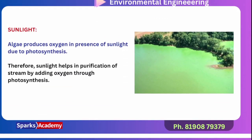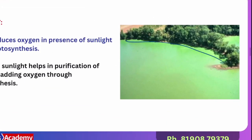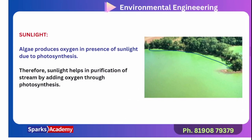Regarding sunlight influences: algae produce oxygen in the presence of sunlight through photosynthesis. In the water body, algae content is present. Through the photosynthesis process, oxygen is produced as a byproduct. Sunlight helps in the purification of a stream by adding oxygen through photosynthesis, ensuring oxygen is available in the water.